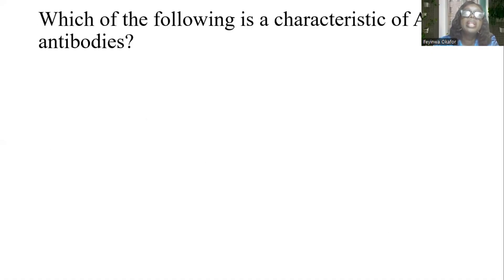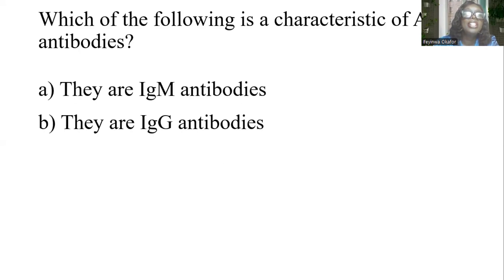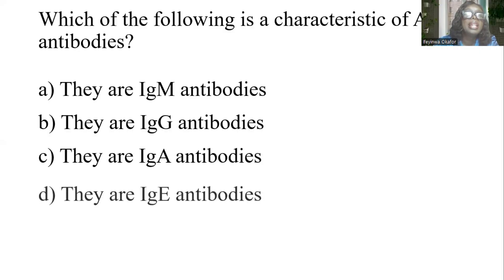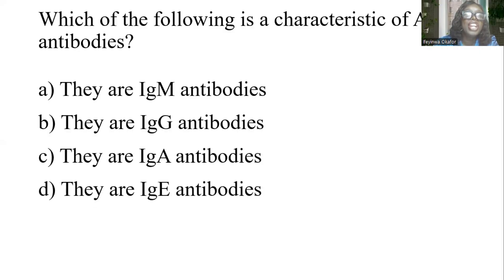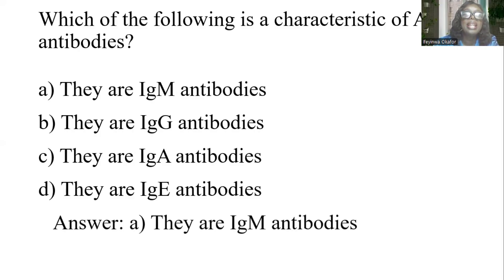Which of the following is a characteristic of ABO antibodies? A) They are IgM antibodies. B) They are IgG antibodies. C) They are IgA antibodies. D) They are IgE antibodies. The answer is A: they are IgM antibodies.